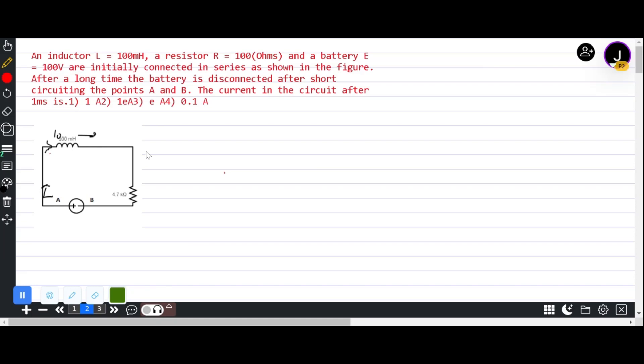So E by R is the short-circuited current. Now at time T equals 0, we assume that I equals I₀, which is E by R.